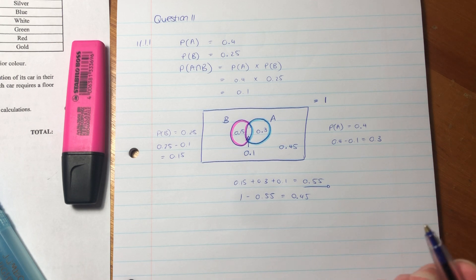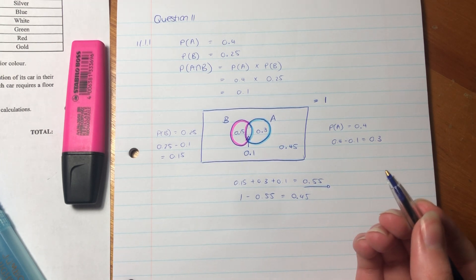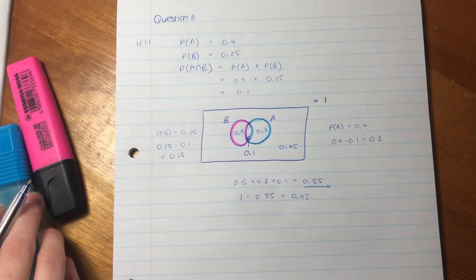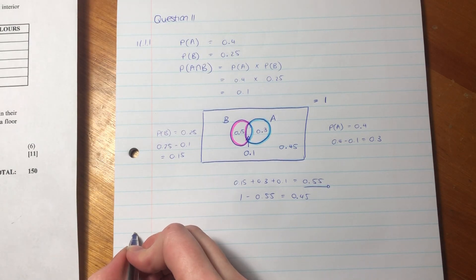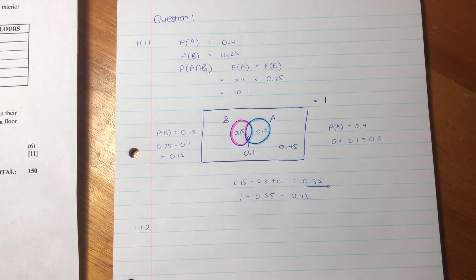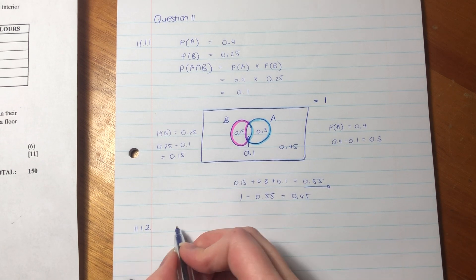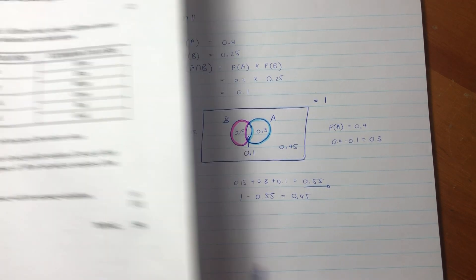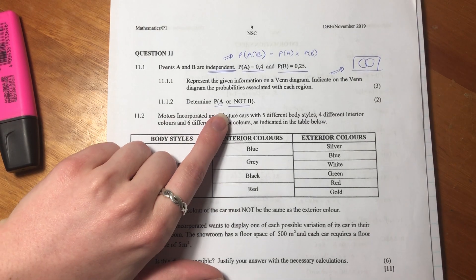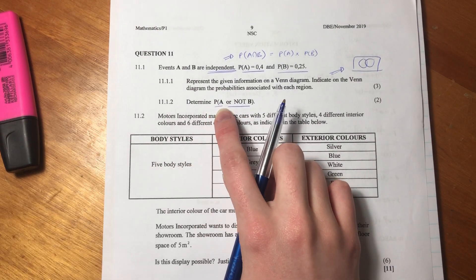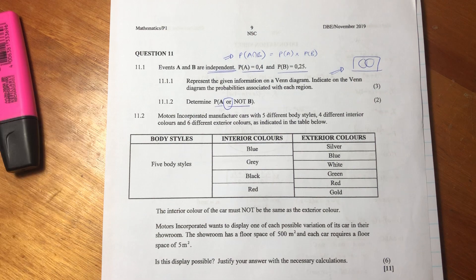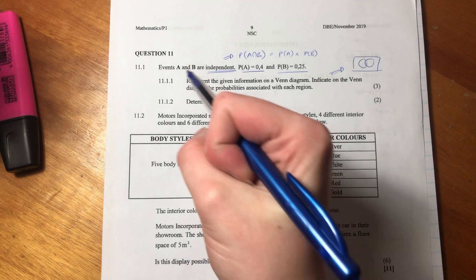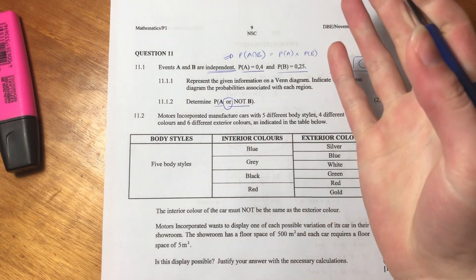Perfect. So that's all they've asked us for this question. Let's now go on to 11.1.2. So now 11.1.2 says the probability of A or not B. This is so important — words in probability are very important. I'm saying you can have A, you can have anything in A, or not B. But you can't just have only B.